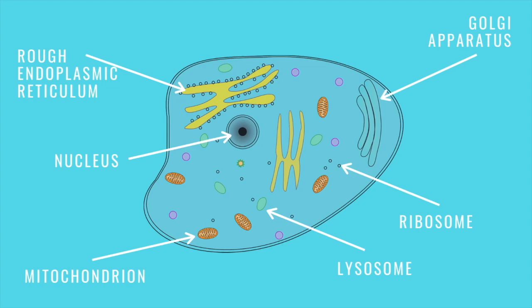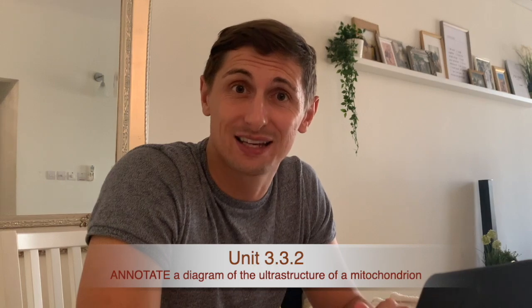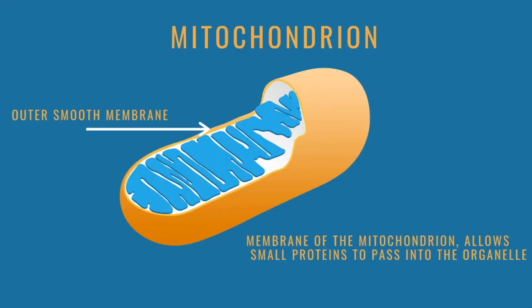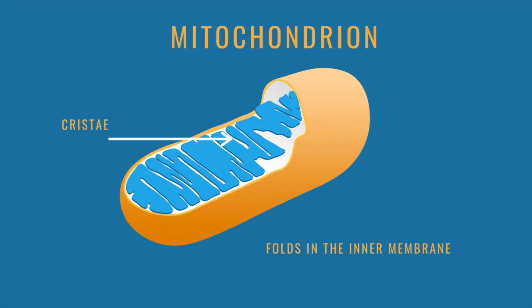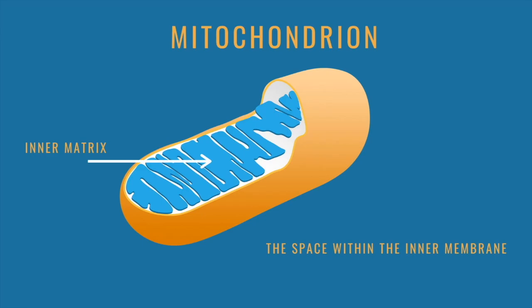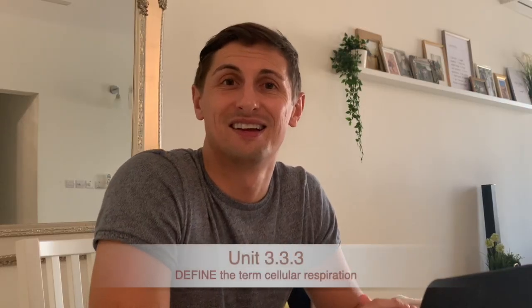Next we need to go within the cell and annotate the structure of the mitochondria. There are only three points to know: first, the outer smooth membrane — the boundary visible on the outside of the mitochondrion. Second, the cristae, which are folds of the inner membrane that provide an increased surface area within the mitochondria. Third, the inner matrix, which is the space contained within the cristae. These three points are what you need when annotating the diagram of the mitochondrion.